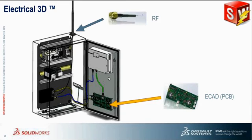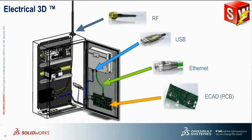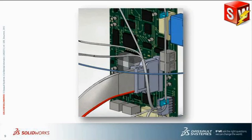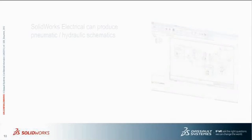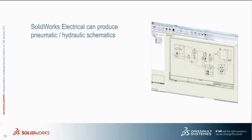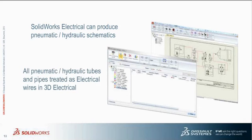Another key benefit of Electrical 3D technology is the ability to auto-route industry standard cable topologies such as RF cables, USB cables, Ethernet, and any other standard topology including optical and fiber cables. Electrical 3D technology also includes the ability to integrate and associate ribbon cable interconnects and prepare for auto-routing through the included SolidWorks electrical routing interface. SolidWorks Electrical is not limited only to electrical schematics — it can readily produce pneumatic and hydraulic schematics. However, if you utilize auto-routing features for pneumatics and hydraulics, all pneumatic and hydraulic tubes and pipes are treated as hydroelectric wires when routing in 3D.